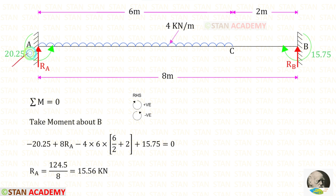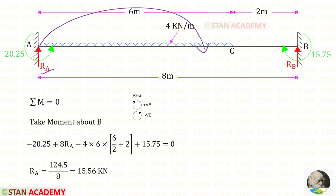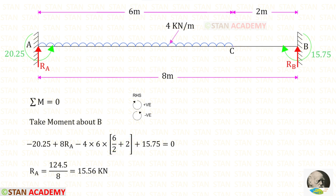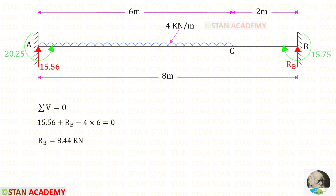Now let us take moments about B to find the vertical reaction RA. The moment MA is acting in the anti-clockwise direction, so it is positive, giving 8·RA. The uniformly distributed load acts in the anti-clockwise direction about B so it is negative; its distance is 6, divided by 2, plus the remaining distance of 2. The moment MB acts in the clockwise direction, so it is positive. Solving, RA = 15.56 kilo Newton.